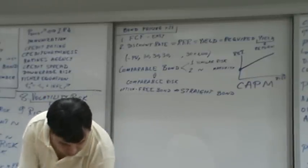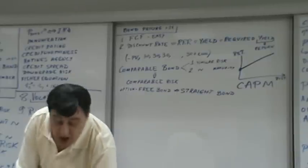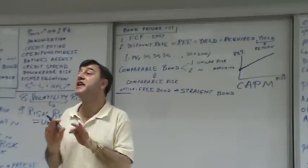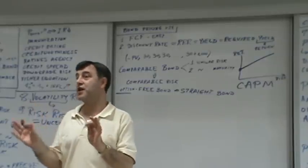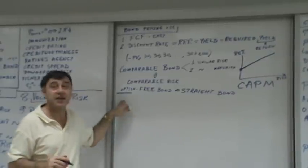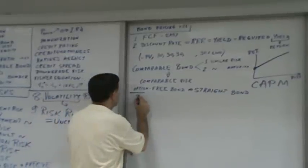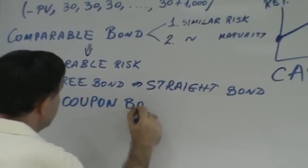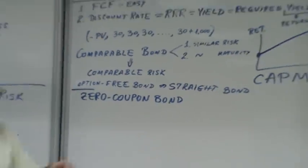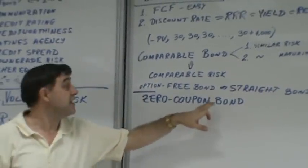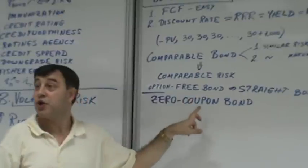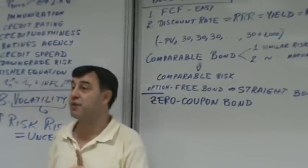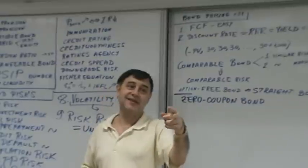One special case — actually the easiest case to value a bond — is the zero coupon bond. A zero coupon bond is a bond which pays zero coupon; in other words, a bond that has no coupon payments and is repaid only one time at maturity.